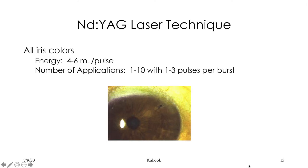ND YAG settings for all iris colors: energy 4 to 6 millijoules per pulse, number of applications 1 to 10 — in my experience typically 1 to 2, especially if you give pilocarpine enough time to work so you don't have trampolining of the iris.